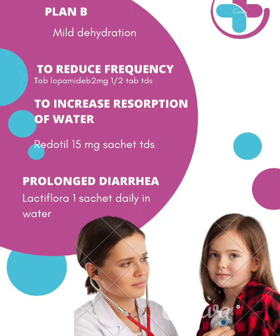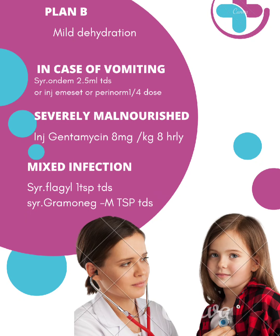For vomiting, we give syrup Ondansetron 2.5ml TDS. If needed, injection IMSet or Perinorm — 1/4 dose IM or IV — can also be given.